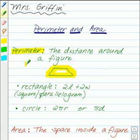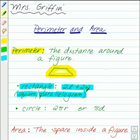There's a couple figures that have an actual formula for their perimeter. One is a rectangle, and its formula is 2 times the length plus 2 times the width. This also works for a square or a parallelogram.